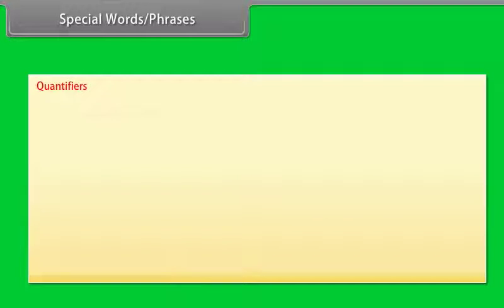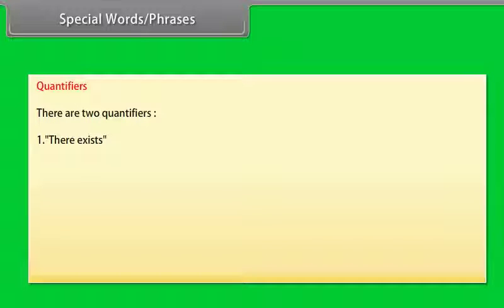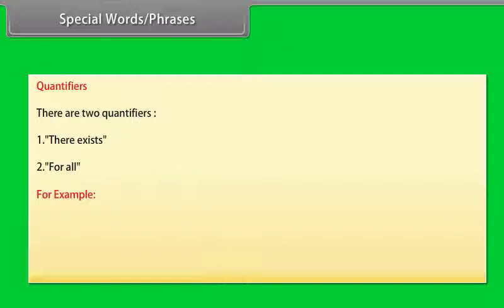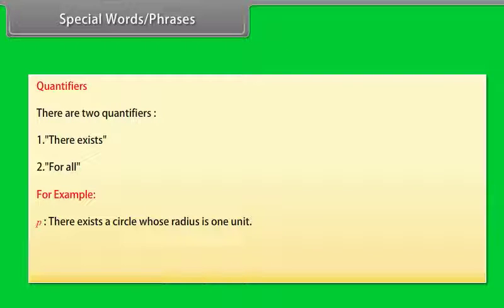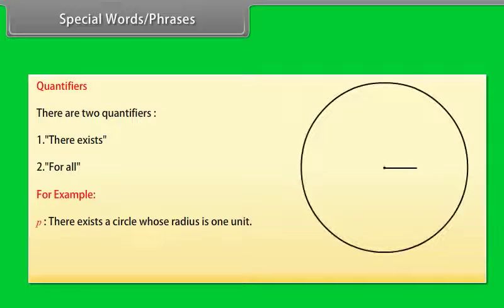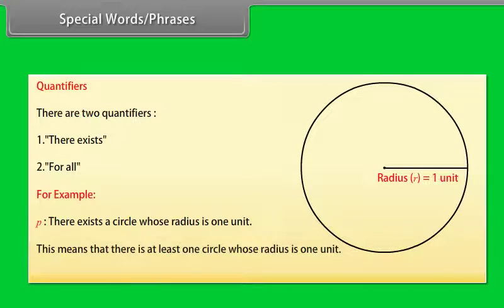Quantifiers. There are two quantifiers: one — 'there exists,' and two — 'for all.' For example: P is a statement that there exists a circle whose radius is one unit. This means that there is at least one circle whose radius is one unit.